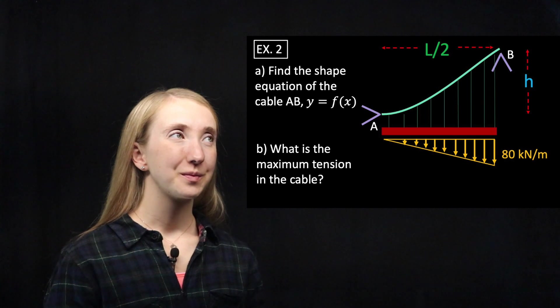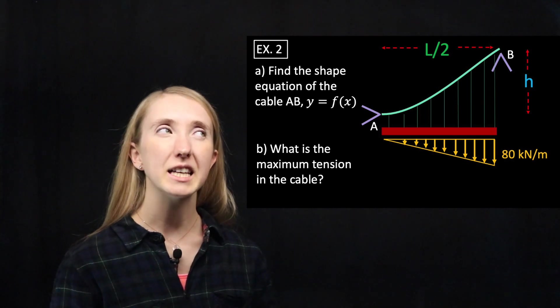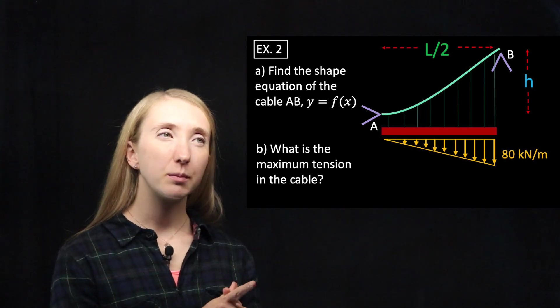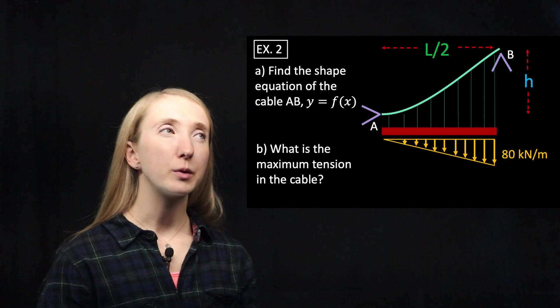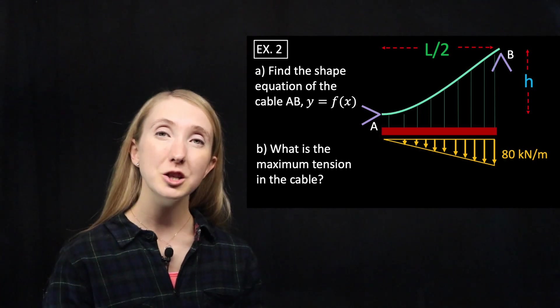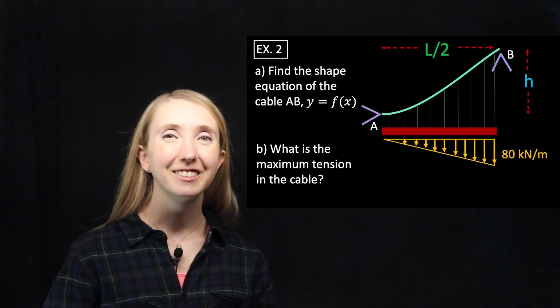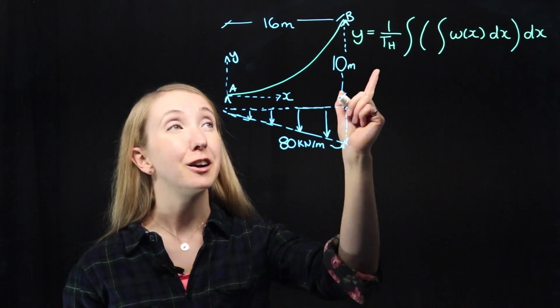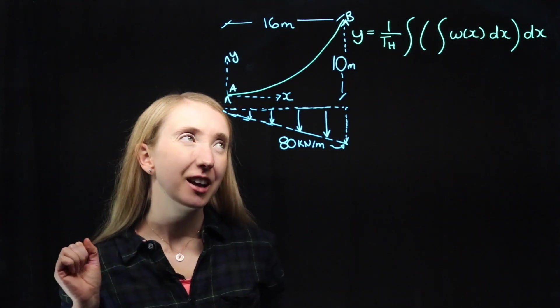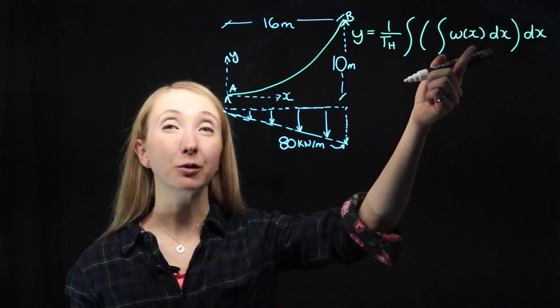Here's question two. The cable system in this problem is similar to our last problem, except we don't have uniform loading and we have a support at the bottom where our cable slope is zero. We're asked to find the shape equation for our cable and also the maximum tension. The first thing we want to do is find our shape equation, which means we need to integrate. But what are we integrating? We need a function for our loading.